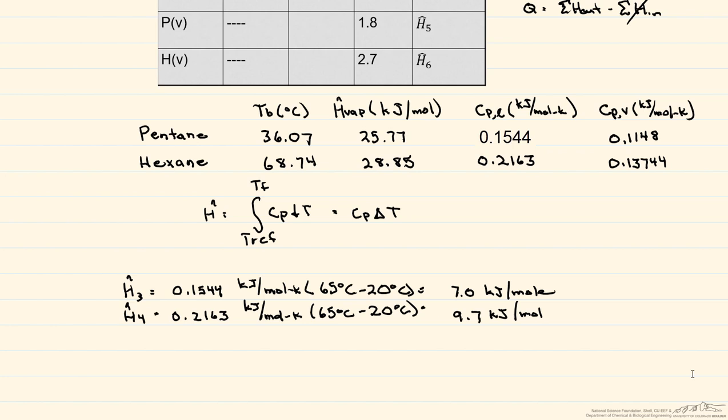However, the next two enthalpies, H5 and H6, involve phase change. So we have to start at the reference state, calculate the sensible heat to the boiling point, add the heat of vaporization, and then find the sensible heat from the boiling point to the final point.